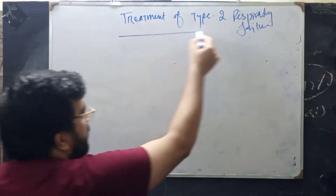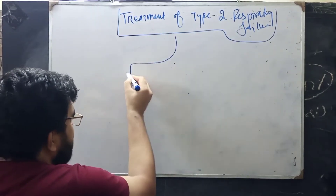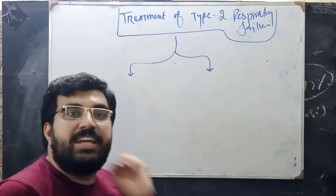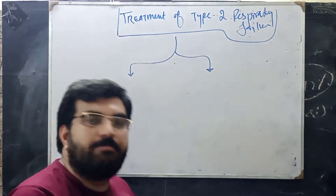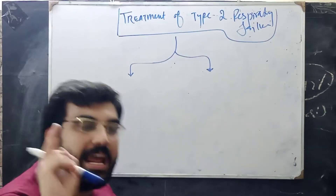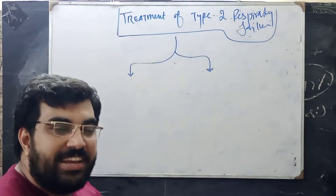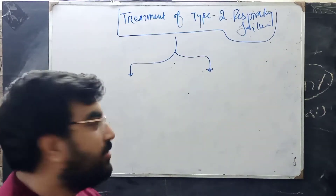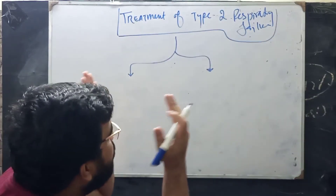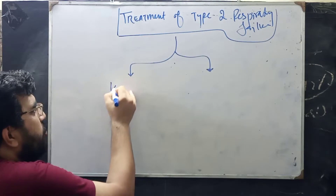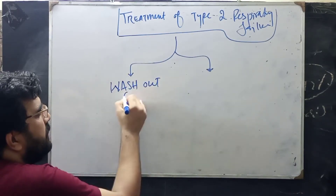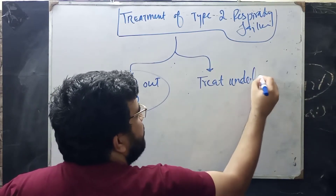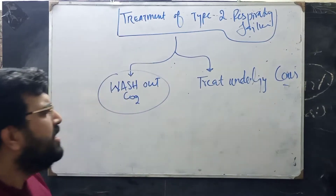Today we discuss the treatment of type 2 respiratory failure. We divide it into two phases. Type 2 respiratory failure is defined as raised CO2 along with decreased oxygen — that criteria was discussed in the previous video. We divide treatment into two phases: first, wash out the CO2; second, treat the underlying cause.